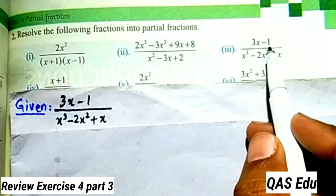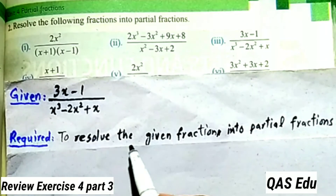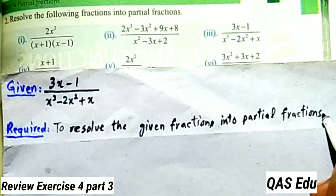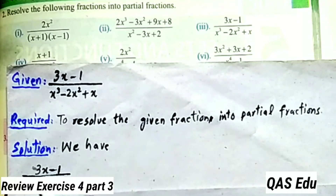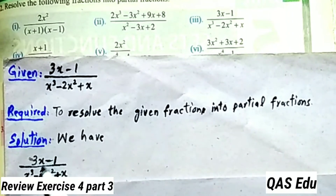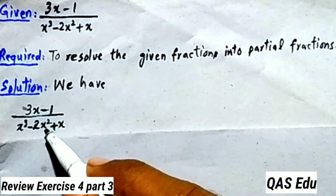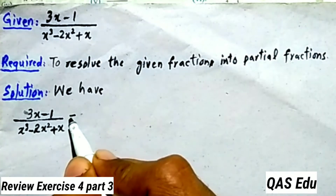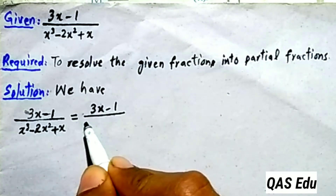Part 3 is (3x-1) over (x³ - 2x² + x). We will try to resolve the given fraction into partial fractions. We will factorize the numerator and denominator. The denominator has numerator 3x-1, and denominator x³, x², x.